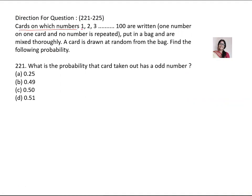Cards on which numbers 1, 2, 3 up to 100 are written, one number on one card and no number is repeated, put in a bag and are mixed thoroughly. A card is drawn at random from the bag, find the following probability. So there are 100 cards, 1 to 100. One card is drawn.